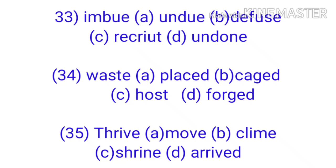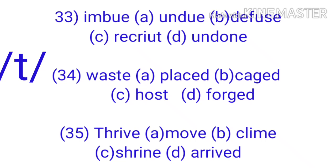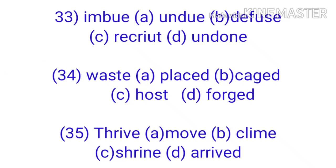The correct answer is option A: 'undo'. The last syllable of the given word 'imbue' has the same sound as the last syllable in option A, 'undo'. Options B, C, and D are not correct because their last sounds do not rhyme with the last sound of the given word. The last sound of 'diffuse' is Z, 'recute' is T, and 'undone' is N. The last sound of 'imbue' is U — likewise the last sound of option A, 'undo'. Both have the U sound.